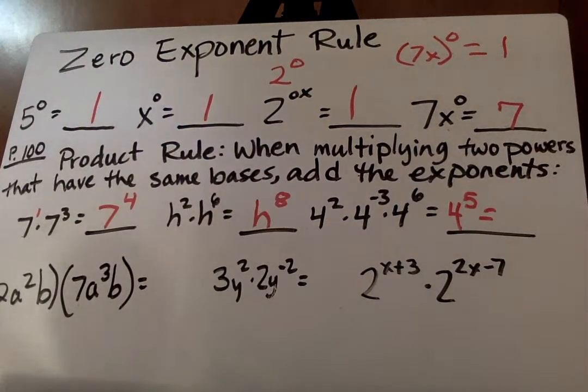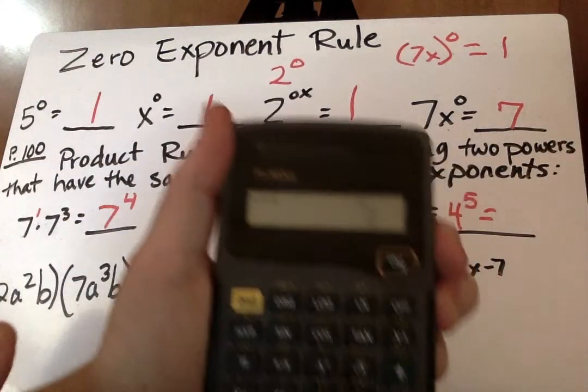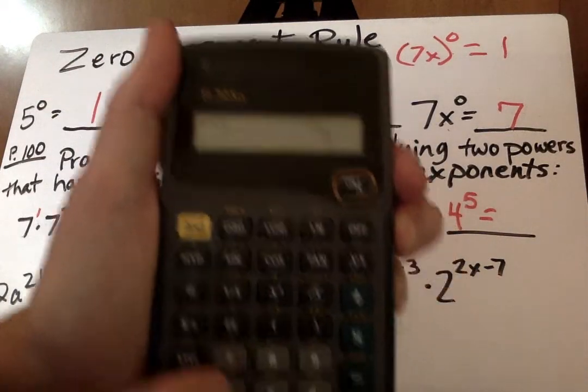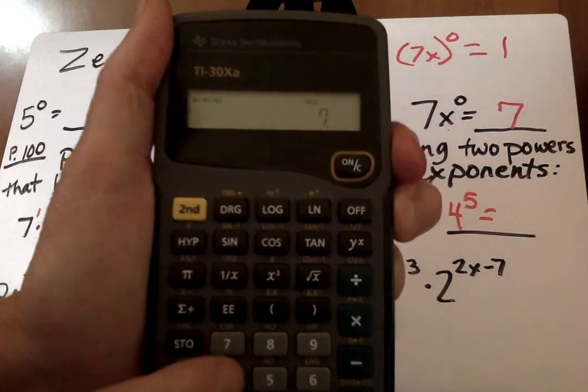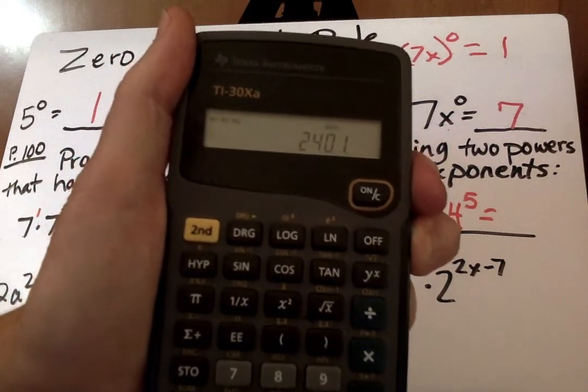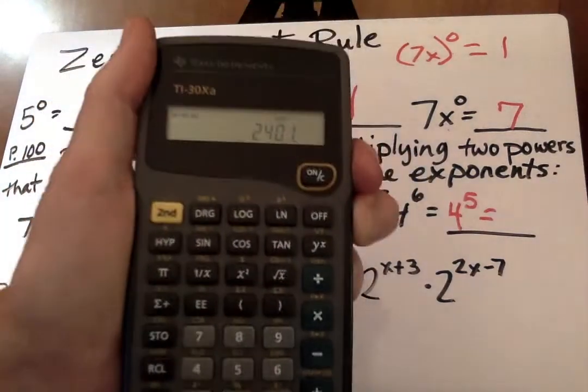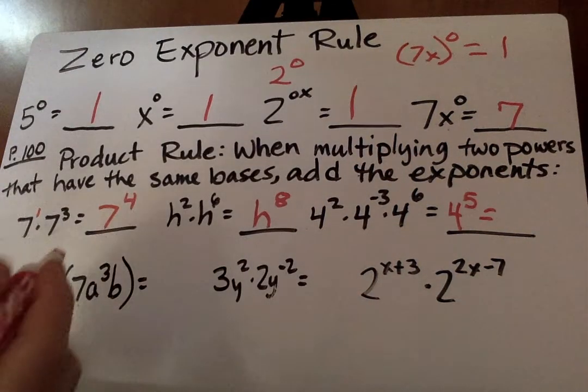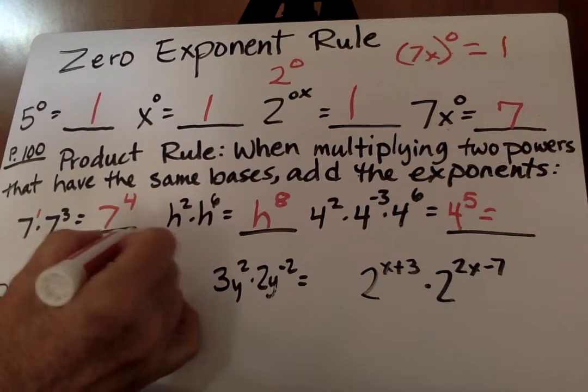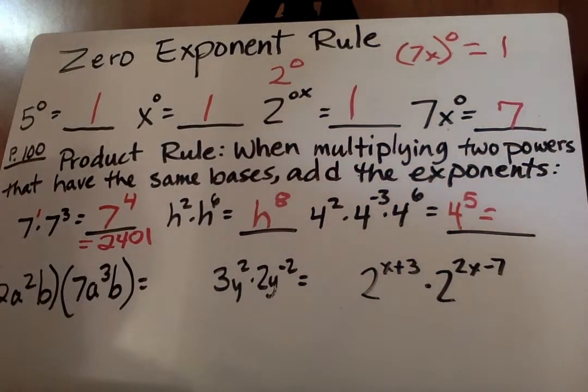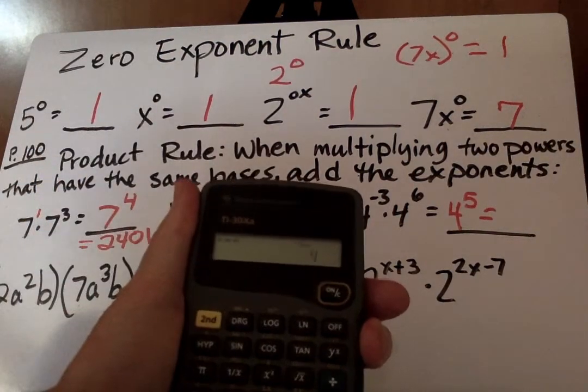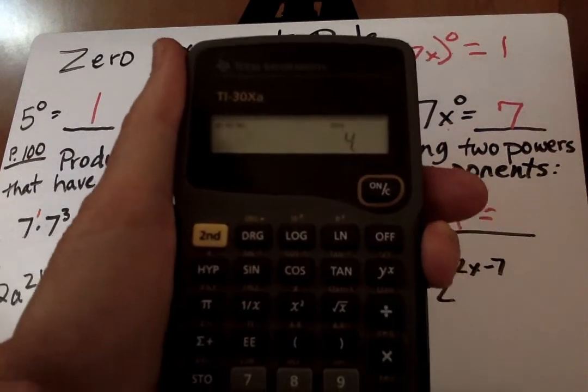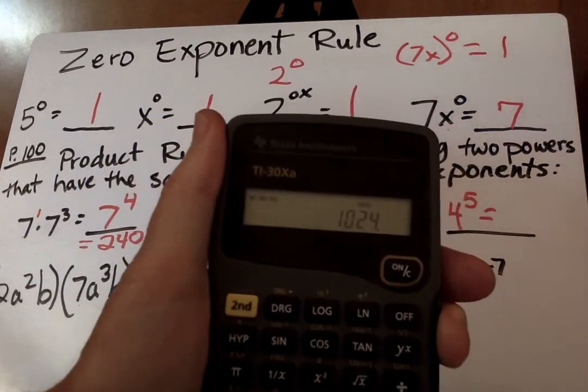Now, we can also get number answers. Once we get our 7 to the fourth power, we can take our handy-dandy calculator here, and we go 7 right here, and then we say y to the x, this button here, 4 equals 2401. So that's what we put also right here, 2401. We can also do 4 to the fifth power, 4, y to the x, 5 equals 1024.